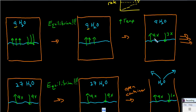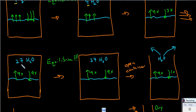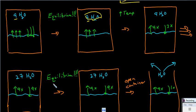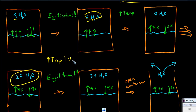Having more vaporizations than condensations, give it a little time, and eventually you'll get to a point where there's a buildup of water particles in the gas phase — the vapor pressure of water — to the point where we have as many ups as downs and we've again reached equilibrium. At low temperature at equilibrium we had only nine water particles in the gas phase, but now at high temperature we have 27. By increasing the temperature, we increase the number of water particles in the gas phase, thereby increasing the vapor pressure of that liquid.